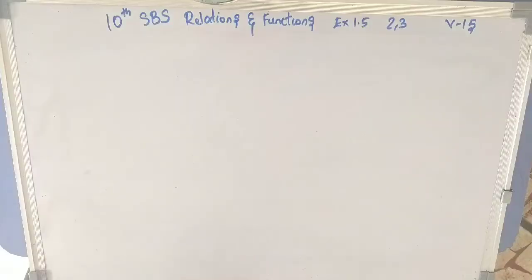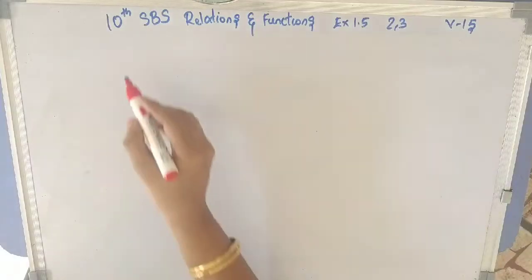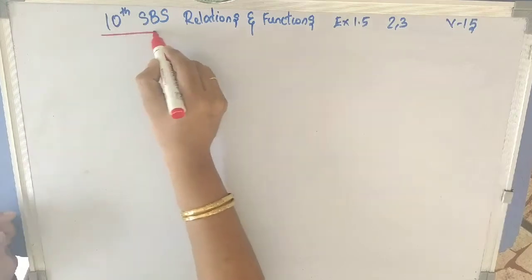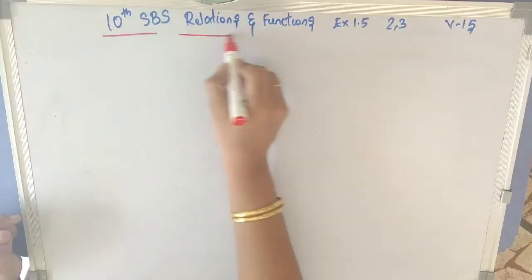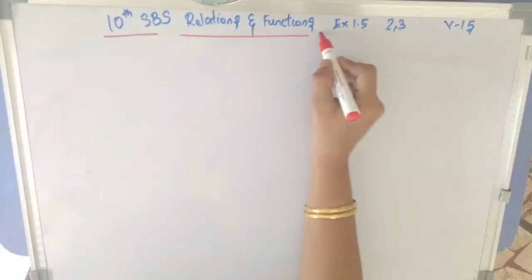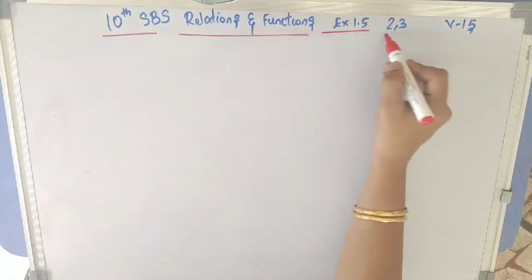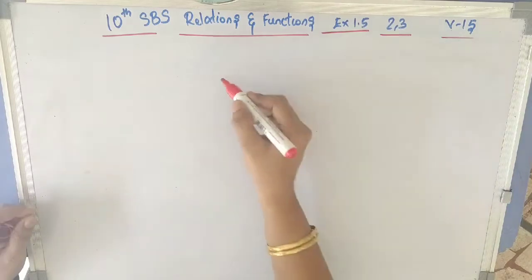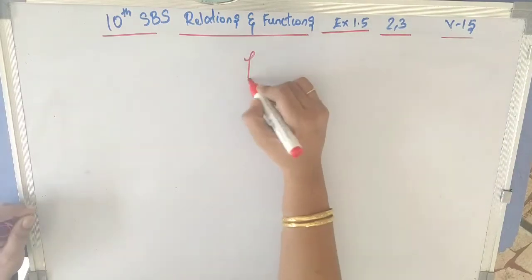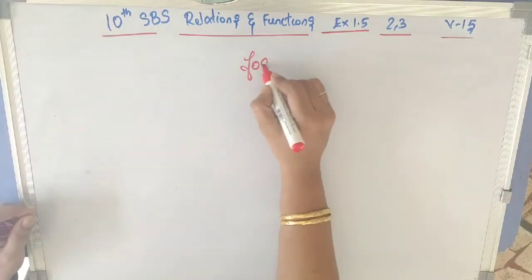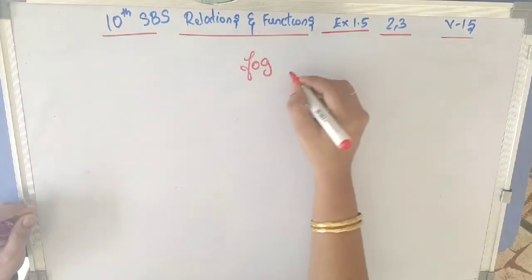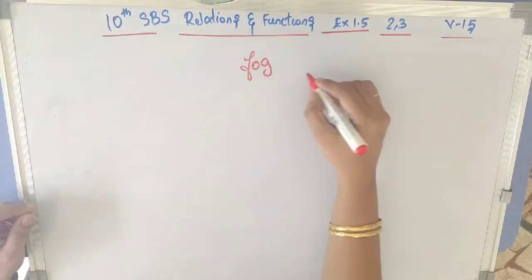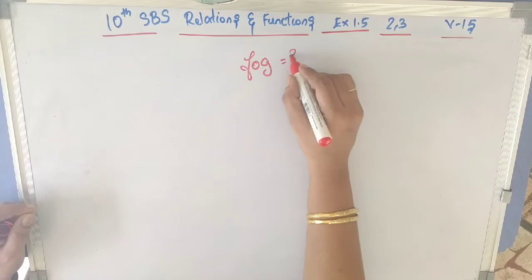Hi everyone, today we are going to see 10th state board syllabus — Relations and Functions, Exercise 1.5, Problems 2 and 3. This is video number 15. Before going to the exercise, we need to know what f∘g is.